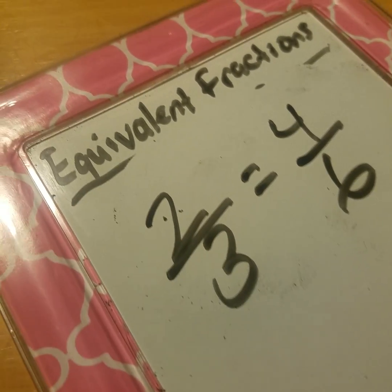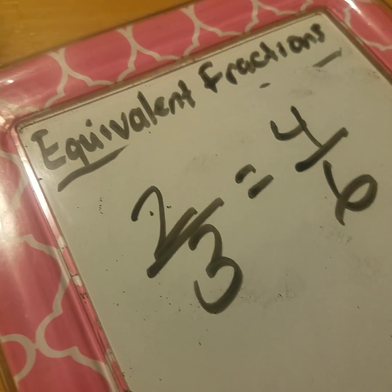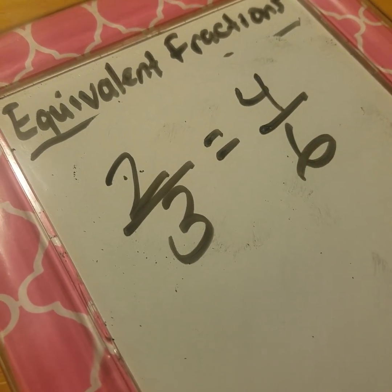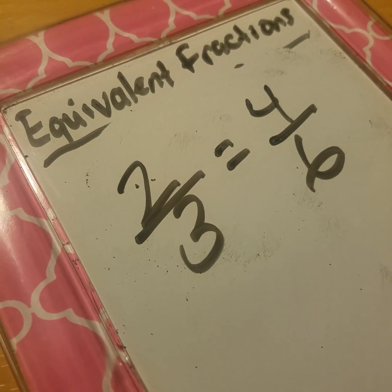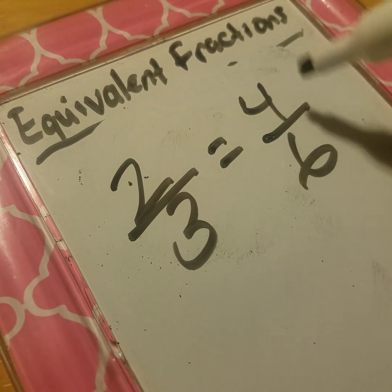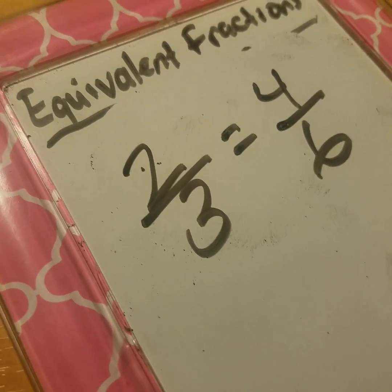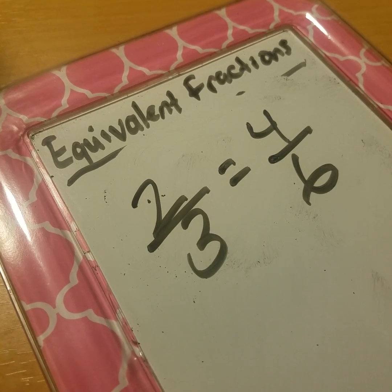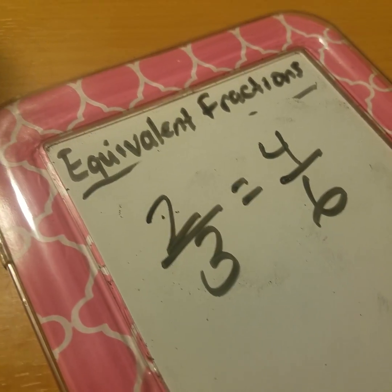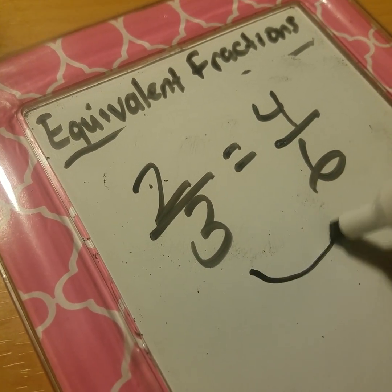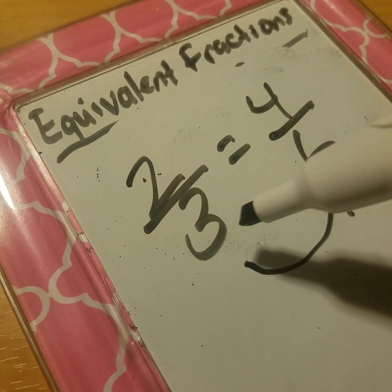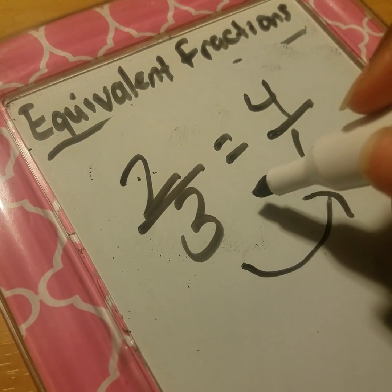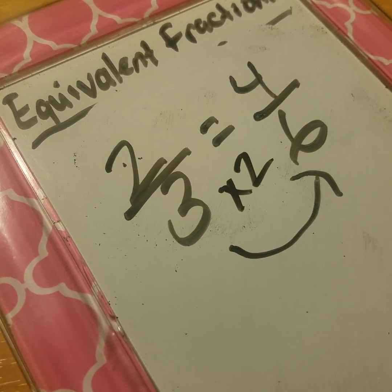From our tape diagram strategy, I came up with two-thirds equaling four-sixths. Another strategy we can use to determine whether they're equivalent is a procedural strategy where we try to find out what we can do to go from three to six. We know that if we multiply three times two, we can get six.